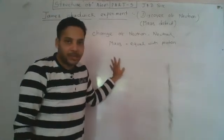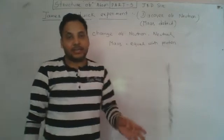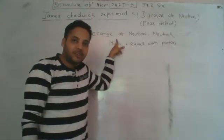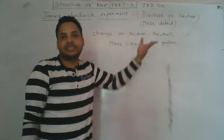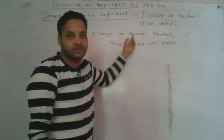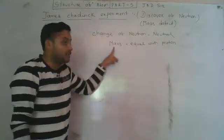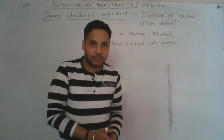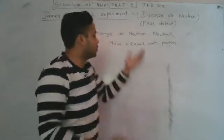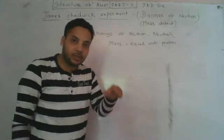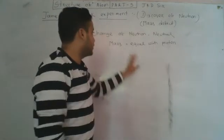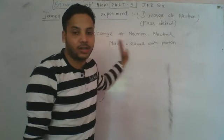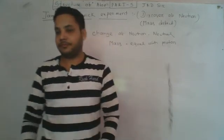If electrons and protons are charged particles — electrons negative and protons positive — then the atom as a whole is neutral. The number of protons equals the number of electrons, so the atom is electrically neutral. Thank you.